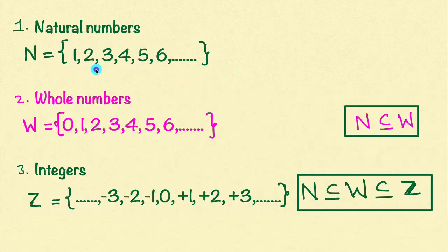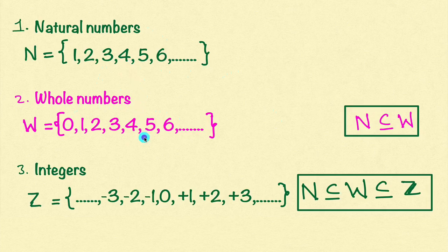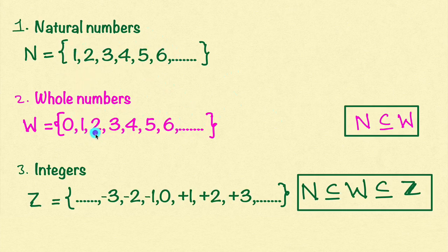For natural numbers, if we add 0, we will get whole numbers. Whole numbers are 0, 1, 2, 3 and so on — in addition to natural numbers, we are just adding 0. Now I am going to discuss the relation between natural numbers and whole numbers. We have a definition called subset. All the elements present in the natural number set are present in the whole number set. For example, 1 is present in natural numbers — is 1 present in whole numbers? Yes. 2 is present — is 2 present there? Yes. So we say this set is a subset of this set.